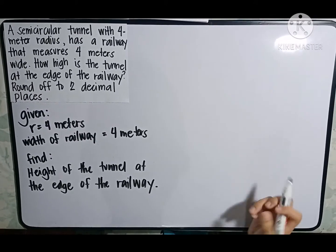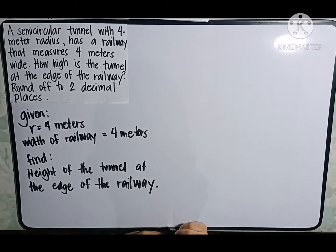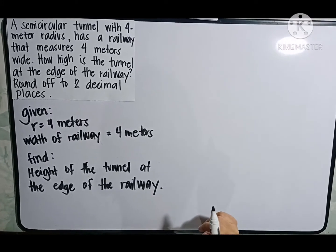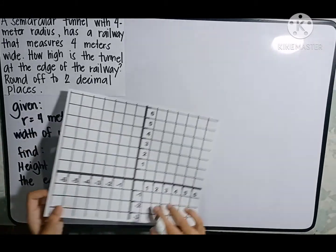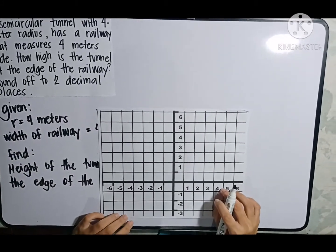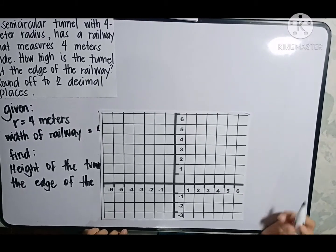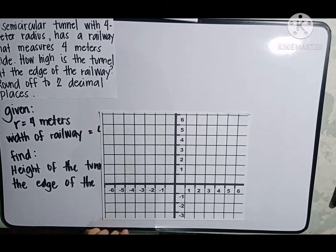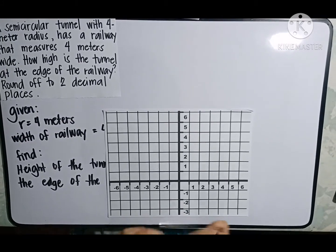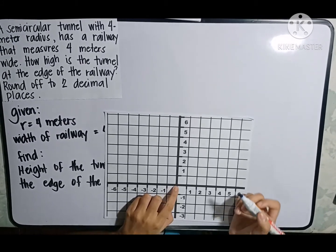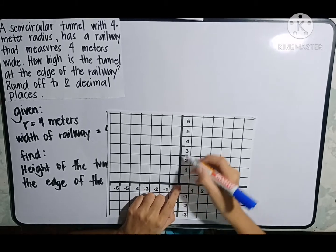Now, let us try to visualize our illustration. For that illustration, I'm going to use this graph. Now, let us locate the 4 meter radius. From the center, the 4 meter radius is in here.